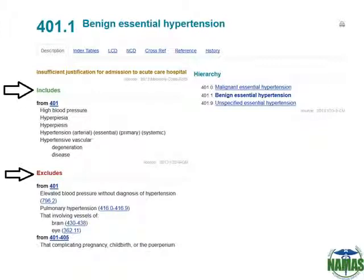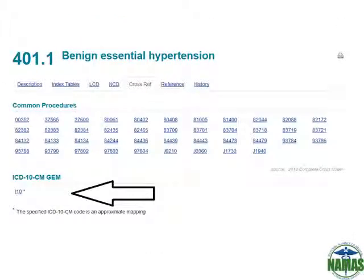Next, let's review an ICD-9 code — for example, 401.1. This is for benign essential hypertension and all of the information you're used to seeing in your ICD-9 book is listed here, from includes, excludes, and any relevant manifestation or code first data. The cross reference tab for ICD-9 not only shows you the common CPT codes this is reported with, but will also code walk you over to the ICD-10 GEM. This code can then be searched on itself to get more information about upcoming ICD-10 changes.